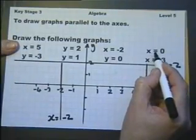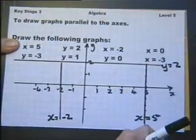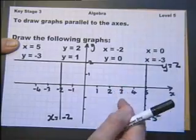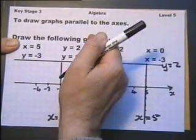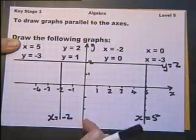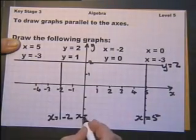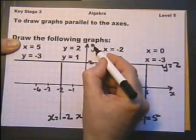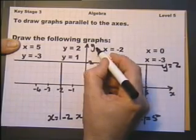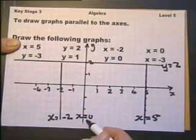x equals 0. Now, if that's x equals 5, that's x equals 4, x equals 3, x equals 2, x equals 1, this is x equals 0. In other words, the y-axis has an equation of x equals 0.